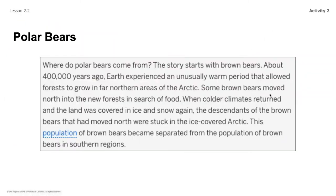If you're following along in the video, we're going to be reading about the polar bears. I love polar bears — they're a species right now that is really struggling to survive with climate change, so it's pretty interesting to read this article and see why they developed in the first place. 'Where do polar bears come from? The story starts with brown bears. About 400,000 years ago, Earth experienced an unusually warm period that allowed forests to grow in far northern areas of the Arctic. Some brown bears moved north into the new forest in search of food. When colder climates returned and the land was covered in ice and snow again, the descendants of those brown bears that had moved north were stuck in the ice-covered Arctic.'